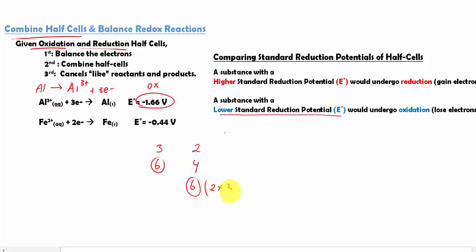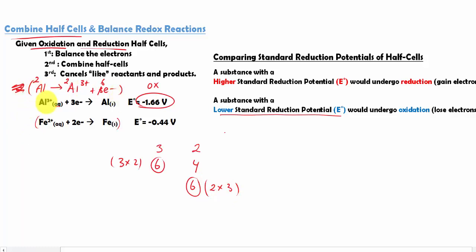For oxidation we use 2×3, and for reduction we use 3×2. We go back and multiply everything in the oxidation half-cell by 2 to give 6 electrons: the coefficients become 2, 2, and 6. For the reduction, we multiply everything by 3: so 3×1=3, 3×2=6, 3×1=3. Notice how both half-cells now have 6 electrons.